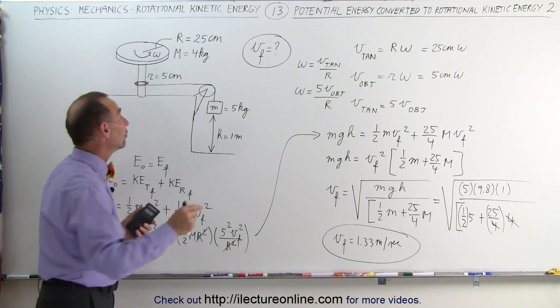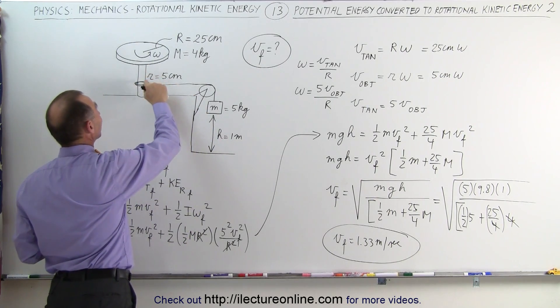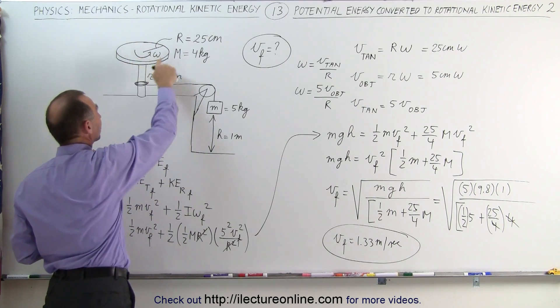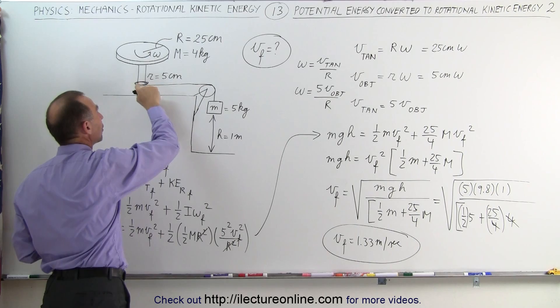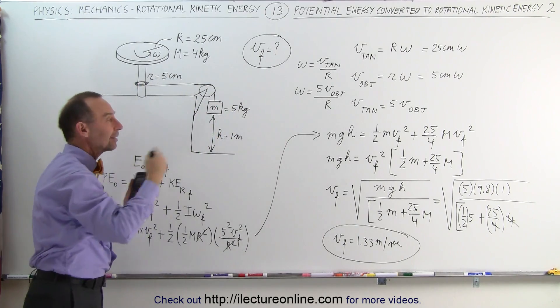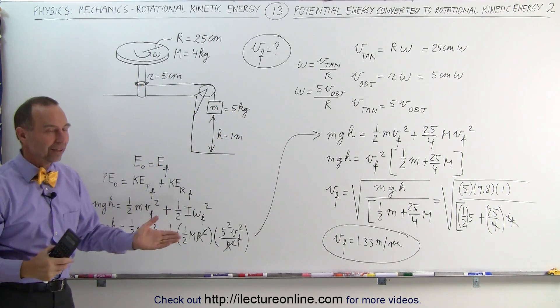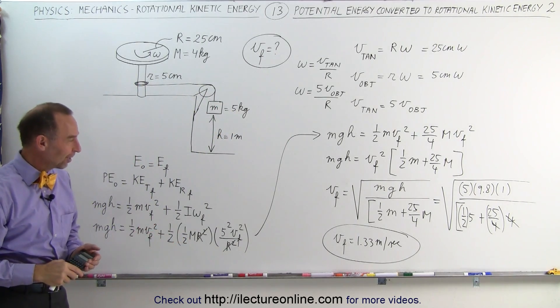So you can see that if the string is attached to something different than the actual rotating disc, you do need to account for that radius difference, and this is how it's done.